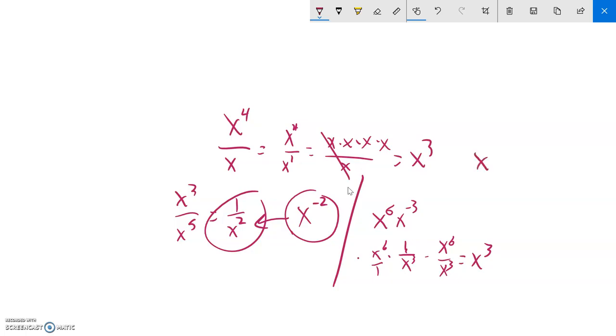So, if I had something like x to the 5th times x to the negative 2, 5 minus 2, x cubed. Or, if I have x to the negative 5th, x to the negative 2, negative 5 minus 2, x to the negative 7th, which I would then write as 1 over x to the 7th.